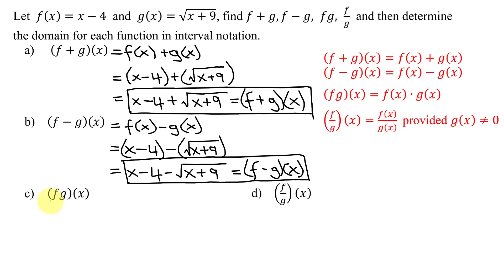Next, I need to find the product function f times g of x. By definition, it is just f of x times g of x, and f of x equals x minus 4 times g of x is the square root of the quantity x plus 9. I definitely need the first set. I need the x minus 4 to be in parentheses, because it is multiplied by the square root of x plus 9.